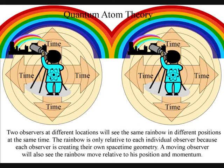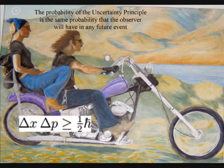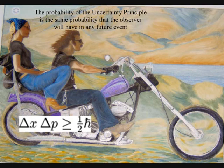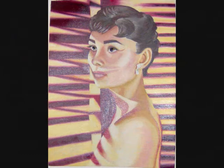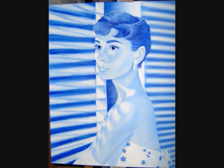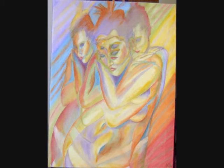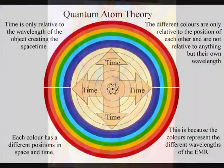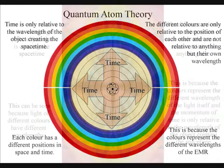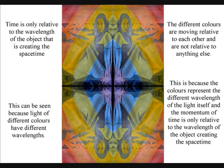The best way to see this for yourself is to observe a rainbow from a moving car or train. The rainbow will also move relative to your position and momentum. You might think this is happening just because all the angles are changing, and you will be right. But the important thing is that the different colours are moving relative to each other, and are not relative to anything else. This is because the colours represent the different wavelengths of the light itself, and the momentum of time is only relative to the wavelength of the object creating the space-time. Therefore we see a beauty of a broken symmetry.